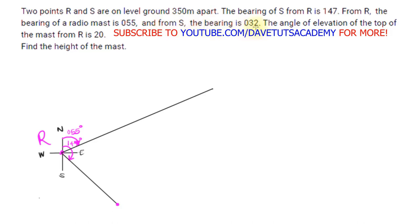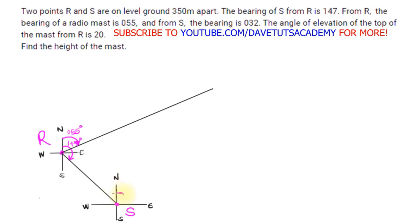From S, the bearing of the radio mast is 032 degrees. So we come to point S, take our four cardinal points — north, south, east, and west — and take a bearing of 032 degrees to the mast. 032 degrees is also in the first quadrant since it's less than 90, so from north we mark that direction and draw the line from S toward the mast.